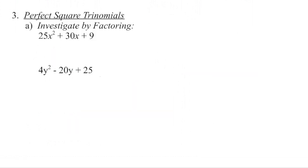The last type of polynomial we're going to look at is how to factor a perfect square trinomial — a polynomial with three terms where the first term and the last term are both perfect squares. To factor a trinomial, first check for a greatest common factor — in this case there's not. Then multiply a times c: 25 times 9 is 225. Are there two numbers that multiply to 225 and add to 30? Yes — 15 and 15.